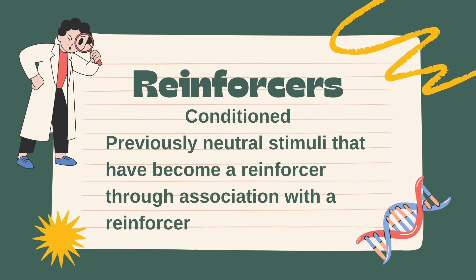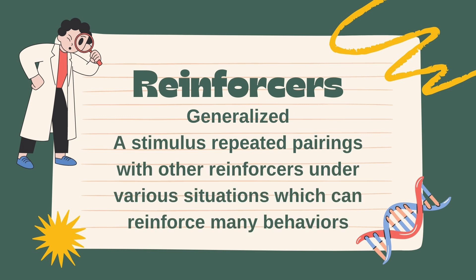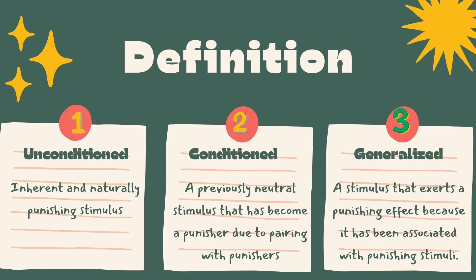A conditioned reinforcer or punisher is something learned through association with an unconditioned reinforcer or punisher. For example, money is a conditioned reinforcer because it has been associated with the ability to purchase food or other desired items. A generalized reinforcer or punisher is something associated with multiple unconditioned reinforcers or punishers — for example, praise is a generalized reinforcer because it can be linked to different unconditioned reinforcers such as food or attention. A conditioned punisher could be a warning signal, like a red dashboard light, associated with a car engine malfunction.